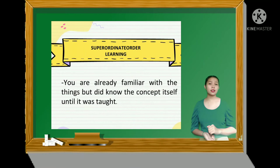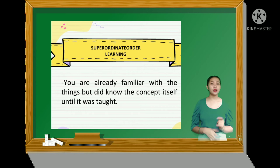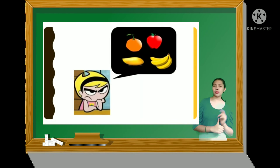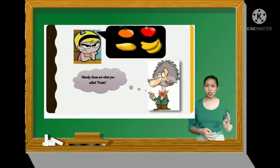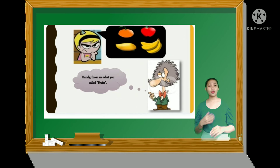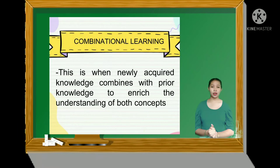The third process is subordinate learning. This is when you are already familiar with specific things but did not know the overarching concept until it was taught. For example, a child recognizes banana, apple, orange, and mango, but did not know until taught that these are all examples of fruits. In this case, the child already knows many examples of a concept but did not know the concept itself until it was taught. The fourth process is combinatorial learning.